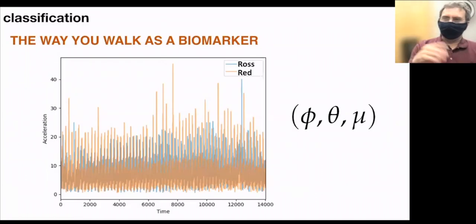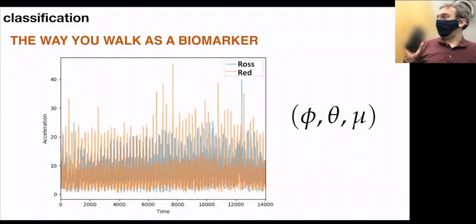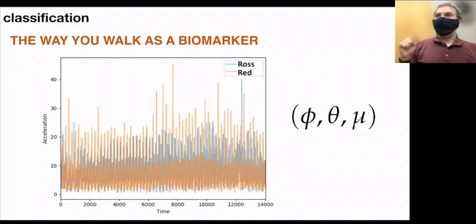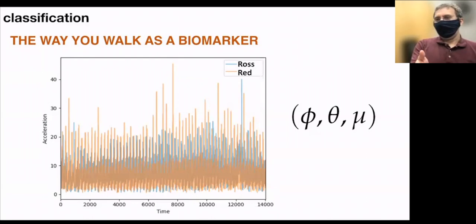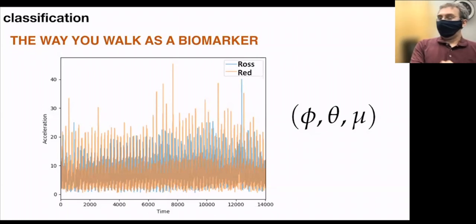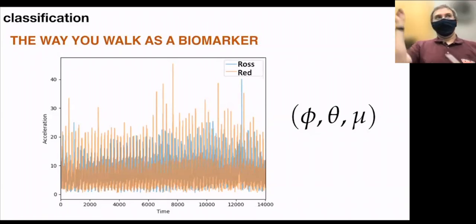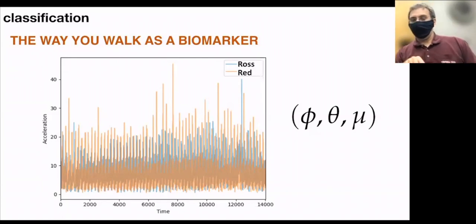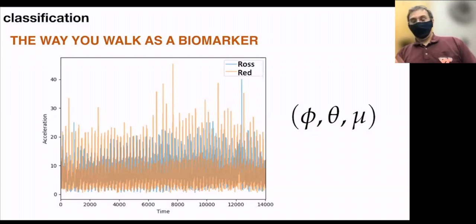Regarding classification: we all have cell phones with accelerometers, and from just that accelerometer data, you can identify who a person is because each person has a unique accelerometer signal. Different people have different walking patterns. You can fit those curves using the three ARMA parameters — the mean, the phi term, and the theta term — and in that parameter space, different individuals occupy very distinct locations. The way you walk can serve as a biomarker, and this kind of tracking is likely happening right now.